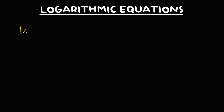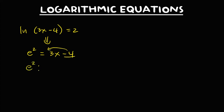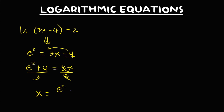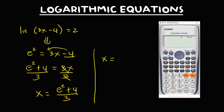For this given, if we have ln (3x − 4) equals 2, to convert in exponential form, we have e to the power 2 equals 3x minus 4. Transpose the negative 4: e to the power 2 plus 4 equals 3x. Divide both sides by 3. So x equals (e² + 4) over 3, which simplifies to approximately 8.0285.